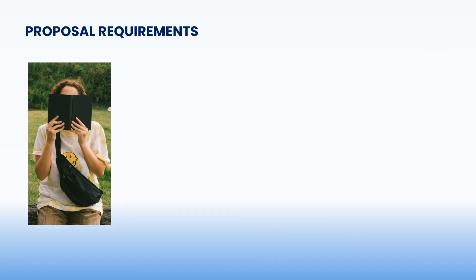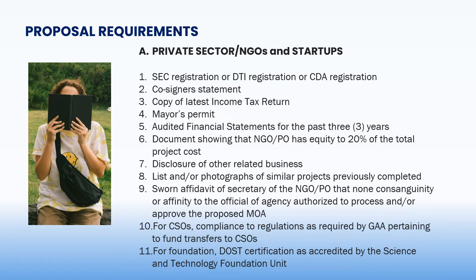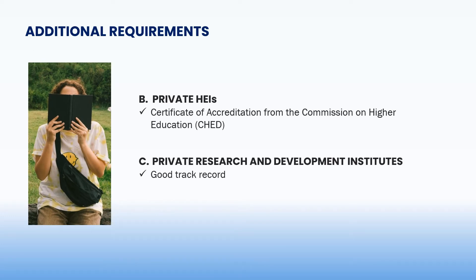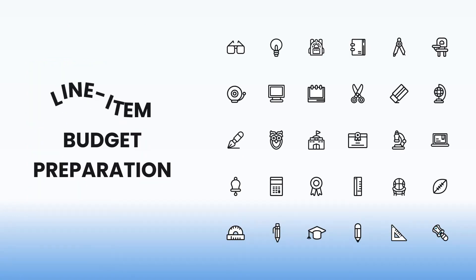For the private sector, non-government organizations, and start-ups, additional requirements apply. For private higher education institutes, a certificate of accreditation from the Commission on Higher Education is required. For private research and development institutes, they should have a good track record with DOST. The grant shall finance project expenditures itemized in an approved Line Item Budget following DOST Form A.